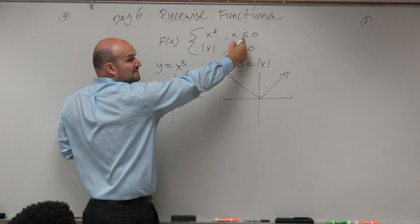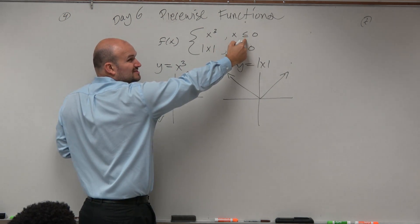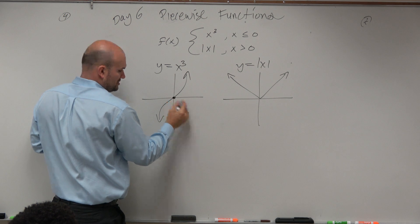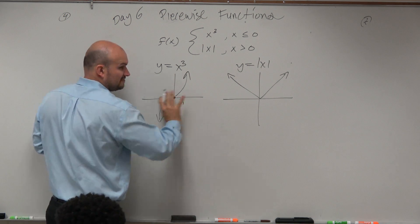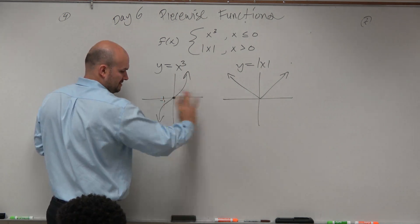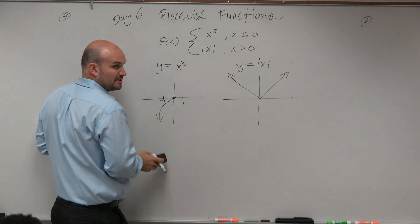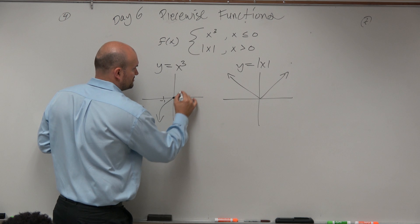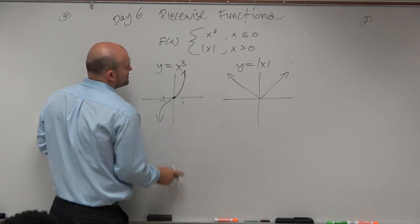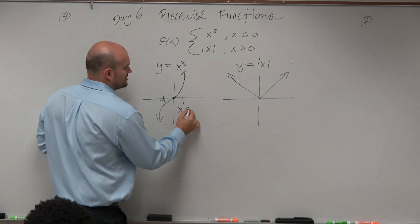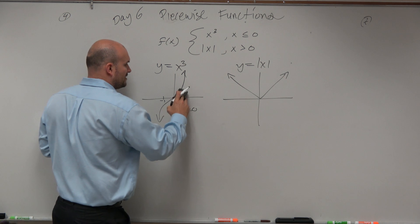Here's x³. We only want to graph x³ for x less than or equal to 0. Closed. Here's positive, here's negative. So anything positive is not part of the graph, so we erase that portion.